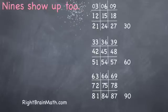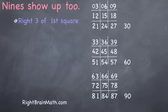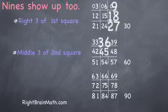Now let's see where the nines show up. In the right column of the first square are nine, eighteen, and twenty-seven. In the middle square are the middle column, thirty-six, forty-five, fifty-four.